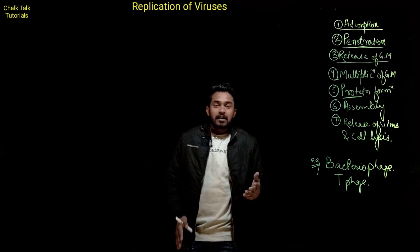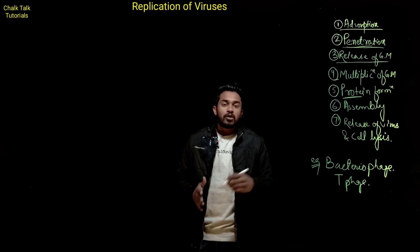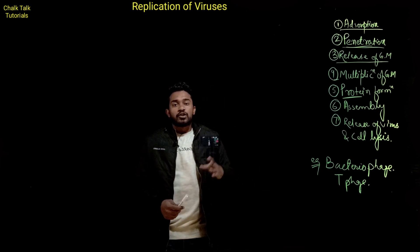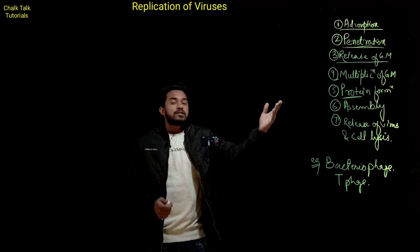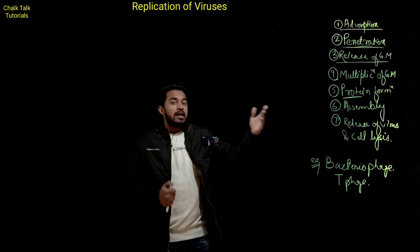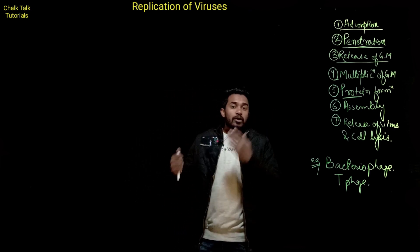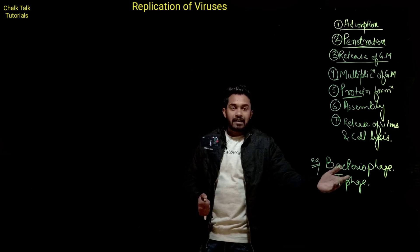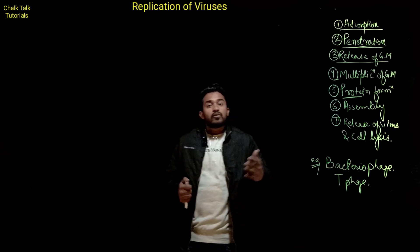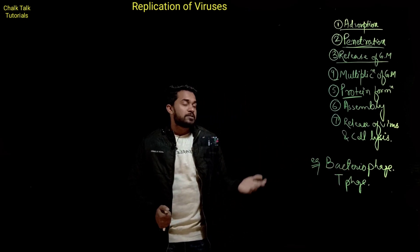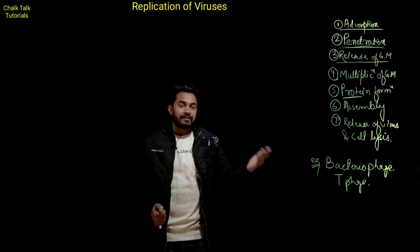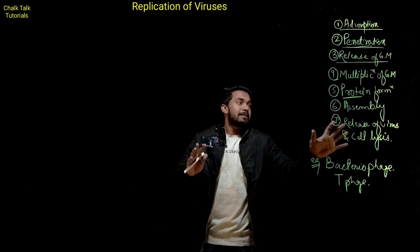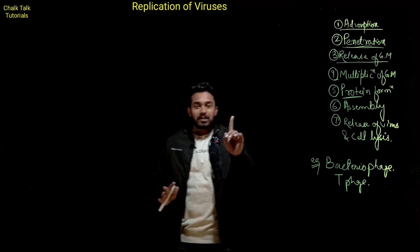If there is a virus attack on an animal cell or a poliovirus, it will go to the nucleus for genetic material replication. But if there is a virus attack on a prokaryotic cell or a bacteria, it will go to the cytoplasm where the genetic material will then replicate. So these are different things, but all the steps are common.